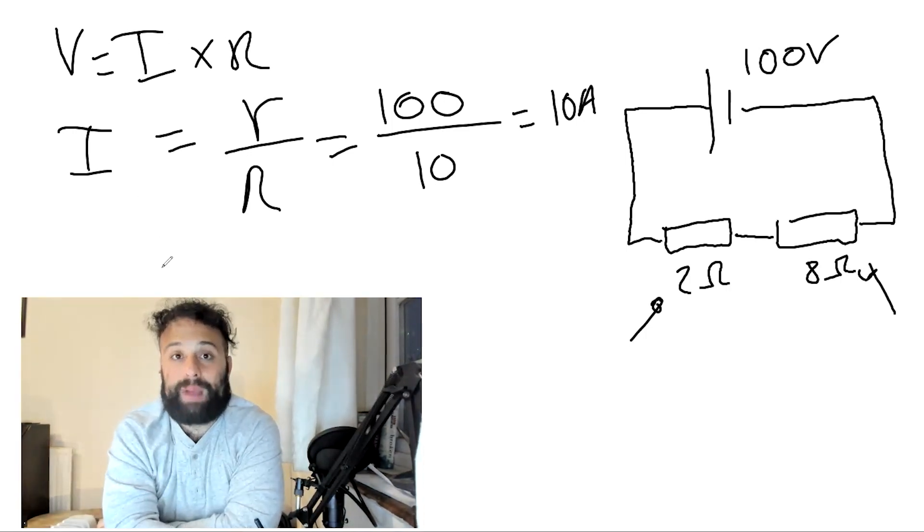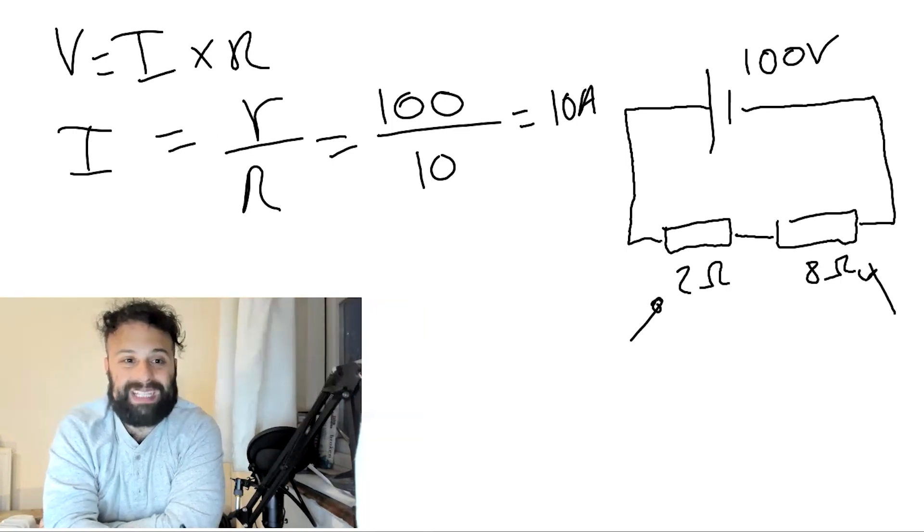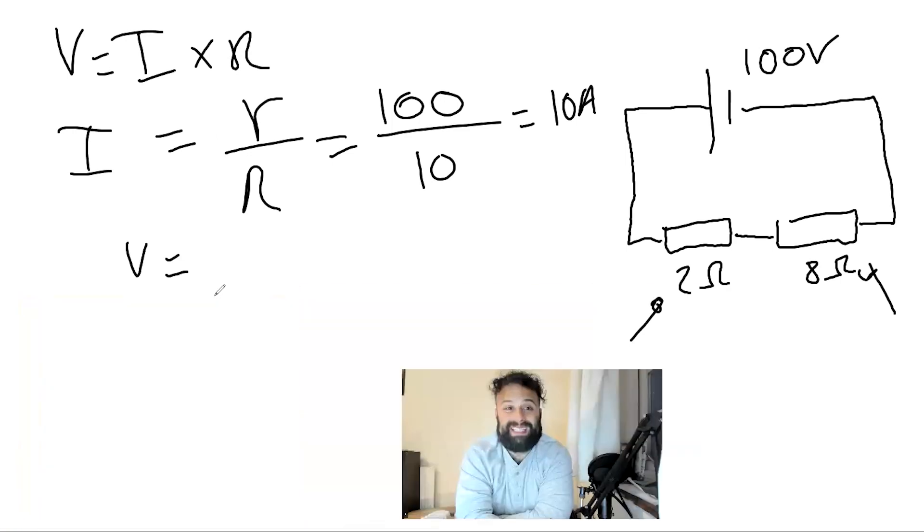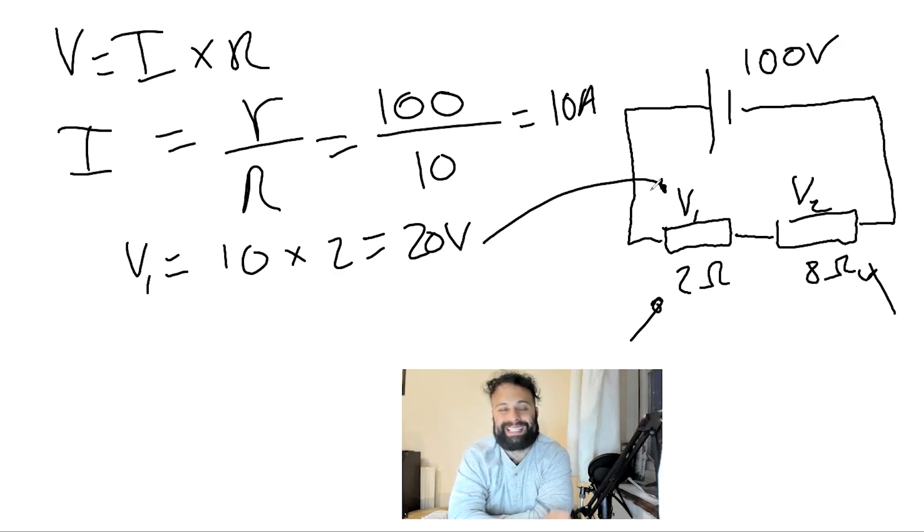Now we know voltage is current times by resistance. So the voltage will be the current, which in this case is 10 amps for each one. But each one has a different resistance. So I'm going to call this V1, and we're going to call this V2. So V1 is equal to 10 times by the resistance of this section, which is 2. So 20 volts will be going through that section.